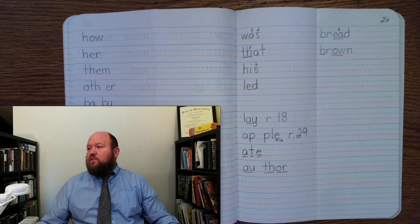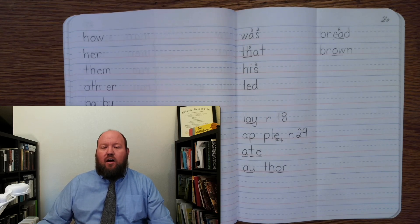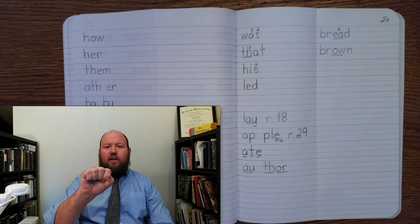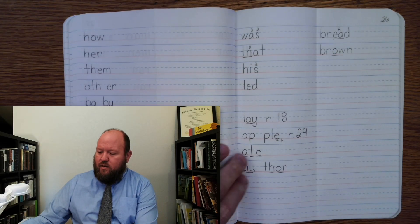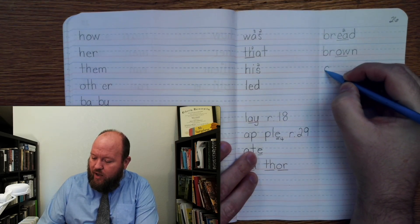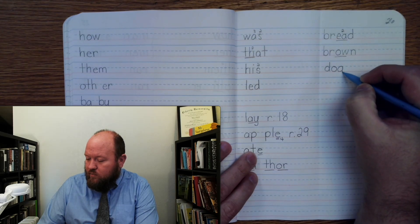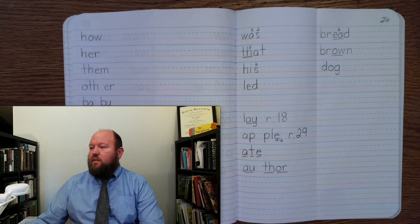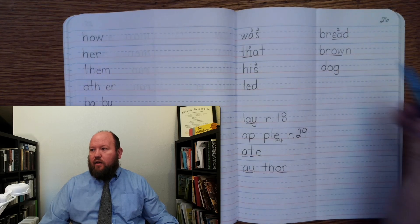The next word is dog. Like, I went on a walk with the dog. Dog. Duh-uh-uh-g. Duh-uh-g. Dog. Markings. Duh-uh-uh-g. Dog.